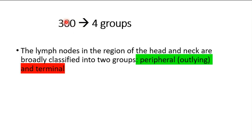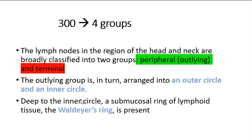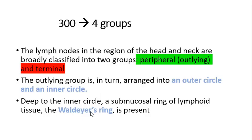There are about 300 lymph nodes in the head and neck region, and the easiest way to study them is to classify them into four groups. Broadly, we classify them into the peripheral or outlying group and the terminal group. The peripheral group is divided into an outer circle and an inner circle, and deep to the inner circle is a submucosal ring of lymphoid tissue known as Waldeyer's ring.